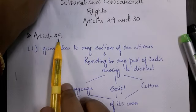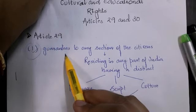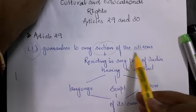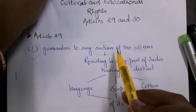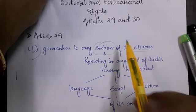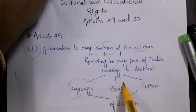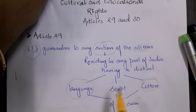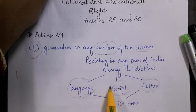As you can clearly see over here, Article 29 ki heading ke neche maine clause 1 mark kia hai. Clause 1 says that it guarantees to any section of the citizens — please try and highlight these words which I am highlighting — residing in any part of India, having a distinct language, script and culture. So what are the key words under Article 29? Sabse pahle language, doosra script, and third is culture. Yeh teeno hi words agar aap yaad rakhte hain, toh aapko Article 29 kya contain karta hai, yeh idea rahega.